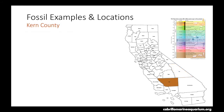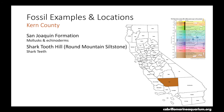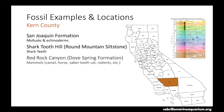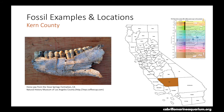The next county is Kern County, where the fossils are a little younger — ranging from Cretaceous in age, about 150 million years ago, through the Quaternary, a little younger than 2.6 million years ago. Within this county you can find mollusks and echinoderms fossilized within the San Joaquin Formation. Fossilized shark teeth can also be found in the Round Mountain Siltstone Formation at Shark Tooth Hill. Various mammal fossils can be found at Red Rock Canyon in the Dove Spring Formation — camel, horse, saber-toothed cat, rodents, and many other mammals. Here is a photograph from the Natural History Museum of Los Angeles of a horse jaw from the Dove Springs Formation.